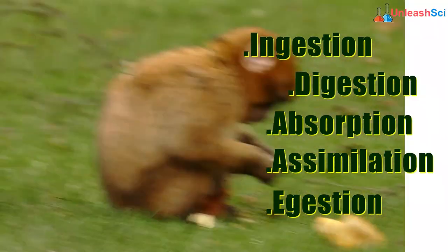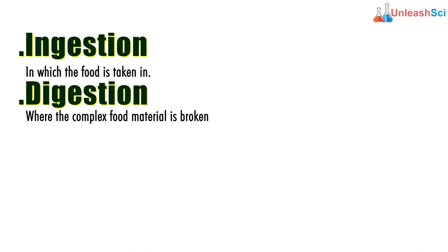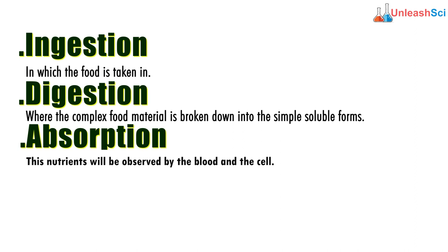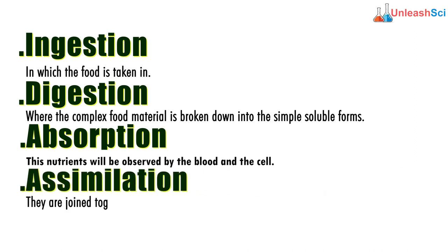The first one is ingestion, in which the food is taken in. The second one is digestion, where the complex food material is broken down into simple soluble forms. Then is absorption — the nutrients will be absorbed by the blood and the cells. Then comes assimilation, where they are joined together to form carbohydrates, fats, proteins, etc.